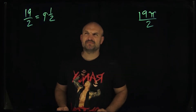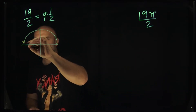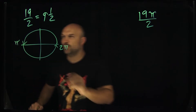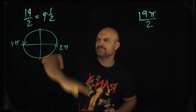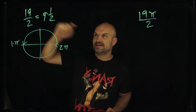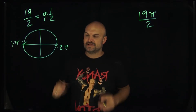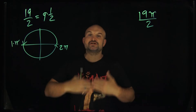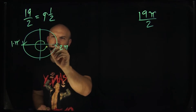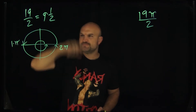We don't really talk about radians in terms of mixed numbers, so we need to understand that halfway around the circle represents π, and all the way around the circle represents 2π. You can keep going with extra revolutions. As long as you're going around an even number of times, you're just back to where you started.